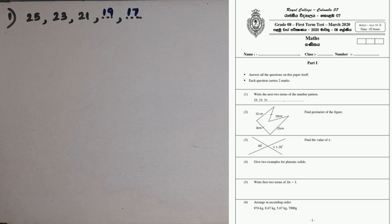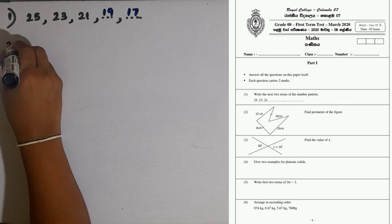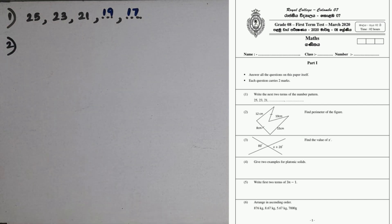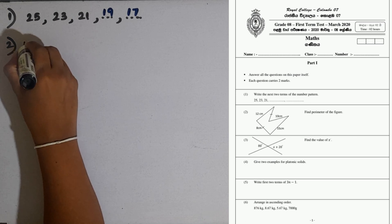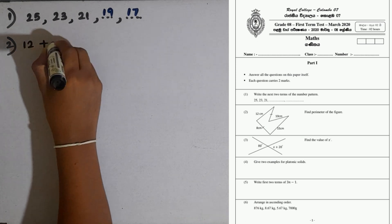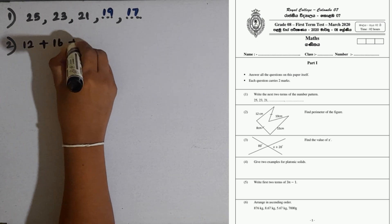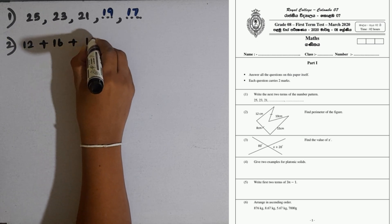Then question number 2. We are given this diagram, find the perimeter of the figure. Two sides are given equal here, so we have to add all the surrounding lengths. Then 12 plus 8 plus 8 is 16, then 10 plus 15.